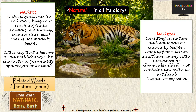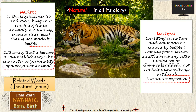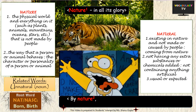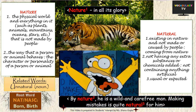Anything related to or derived from nature is called 'natural.' In a different sense, nature is also the essence of a person or animal and can refer to the characteristic behaviour or personality of someone. Similarly, we use the word 'natural' when something is quite usual or expected. For example: 'By nature, he is a wild and carefree man. Making mistakes is quite natural for him.' The word 'unnatural' would be the opposite of natural in this meaning.